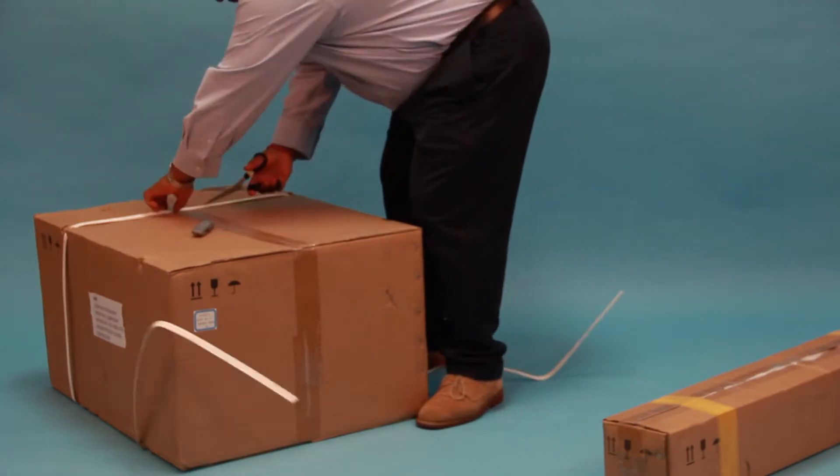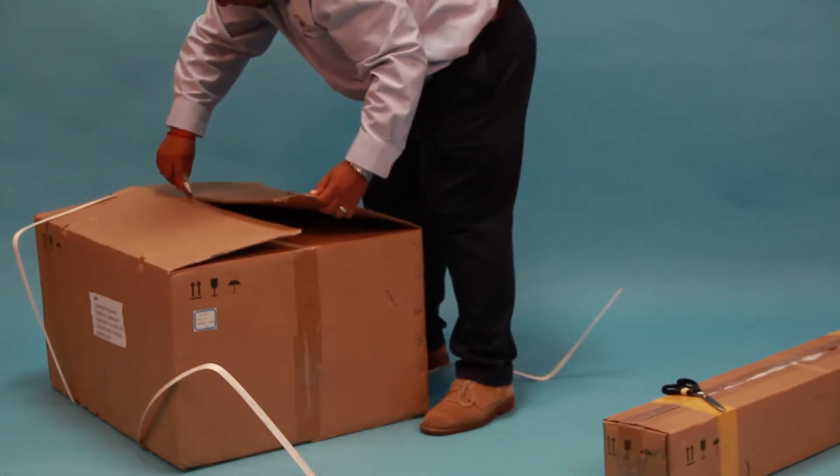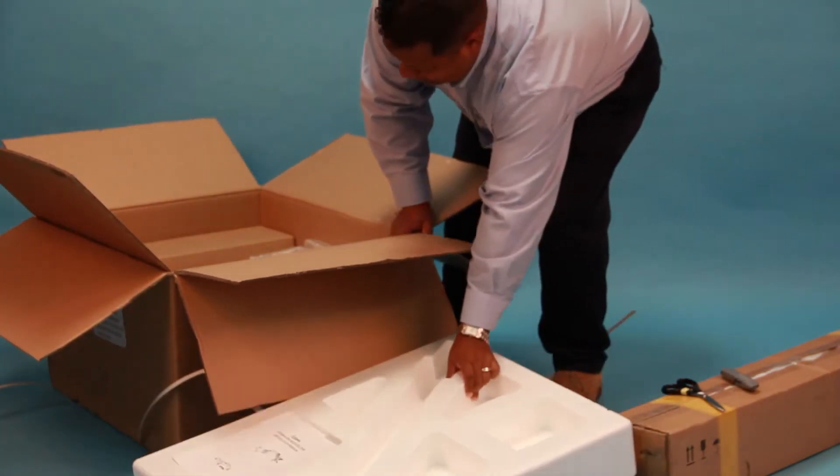The sergioscope is shipped unassembled in two boxes. Carefully open the boxes and lay out all the parts. The large box contains the base and most of the parts.